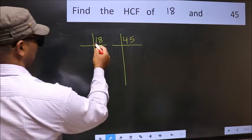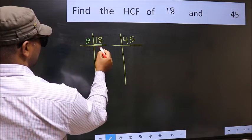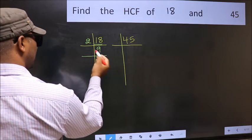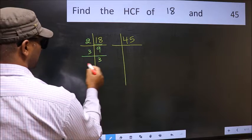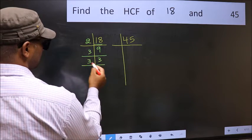Here we have 18. 18 is 2 9's 18. 9 is 3 3's 9. 3 is the prime number so 3 1's 3.